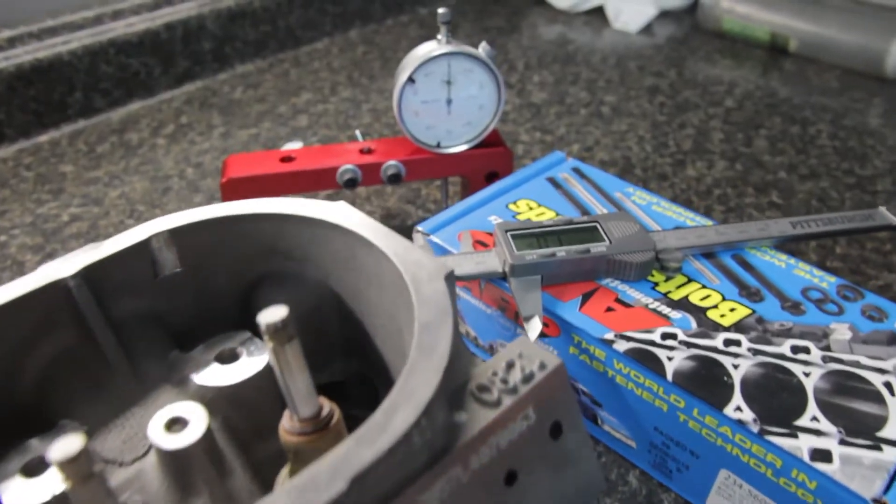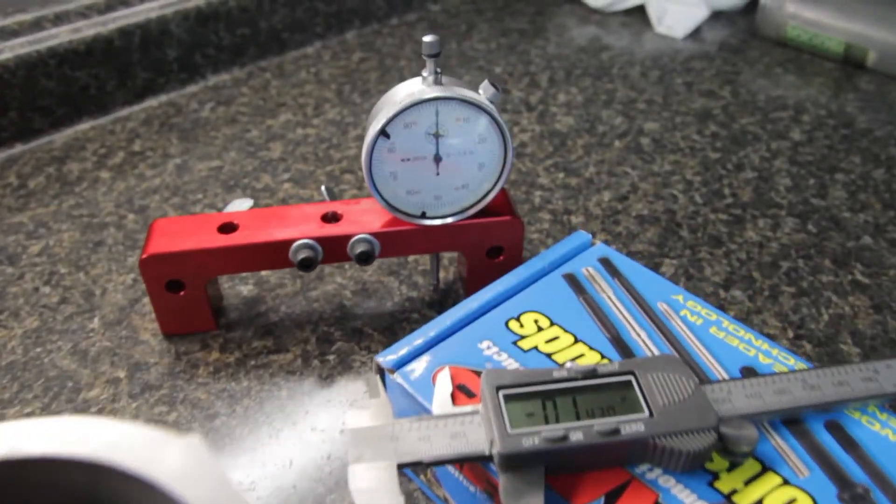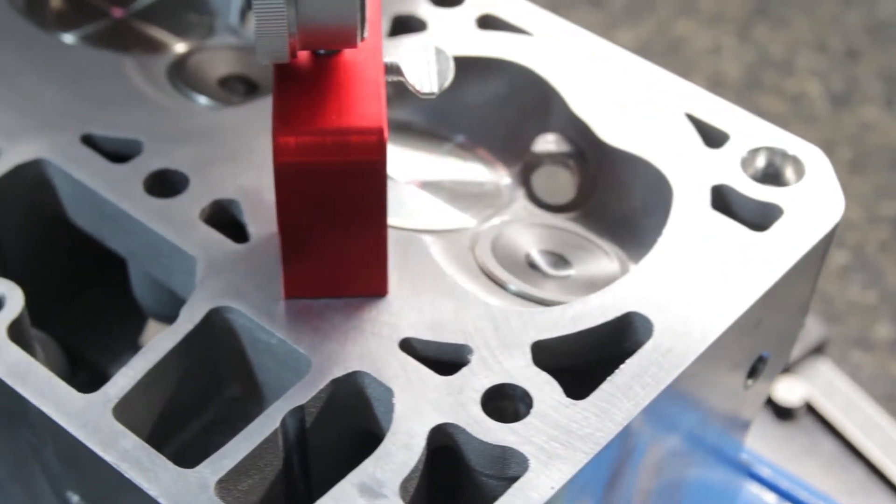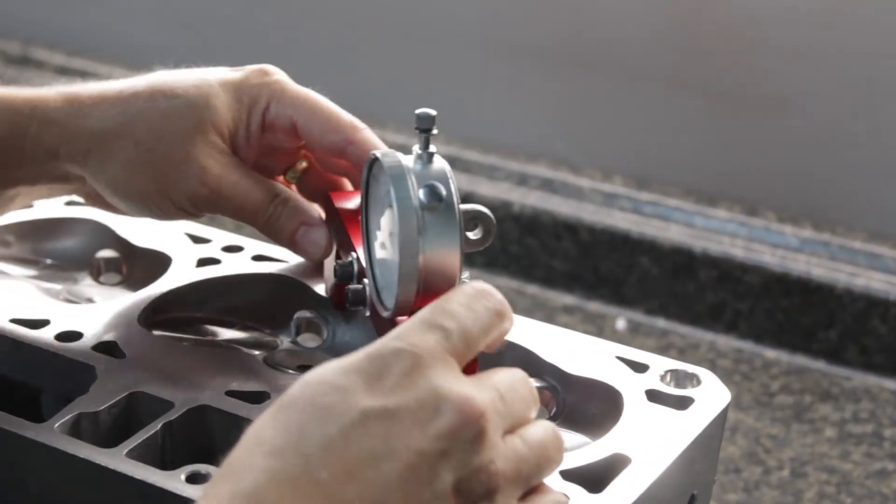There are two methods for checking valve free drop. One is with a dial indicator and a bridge like we have here. The other is with a caliper.